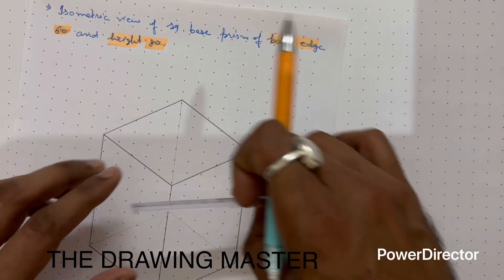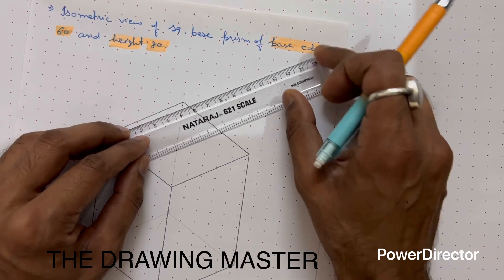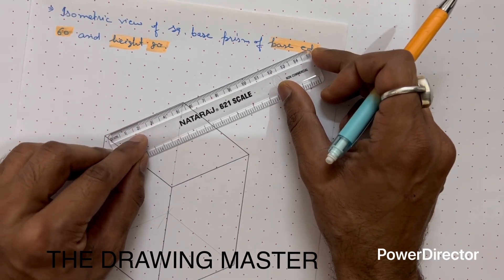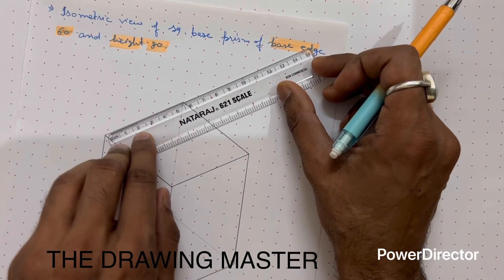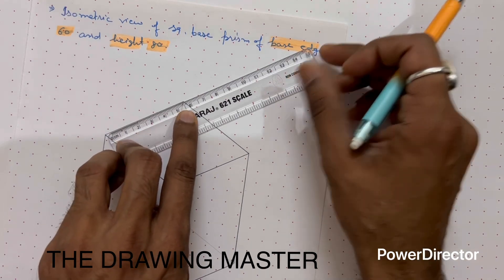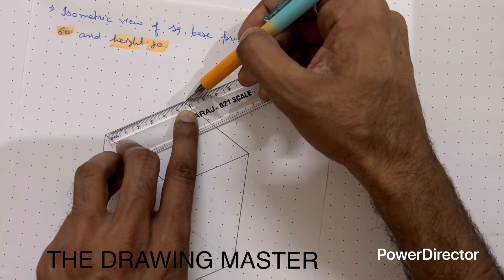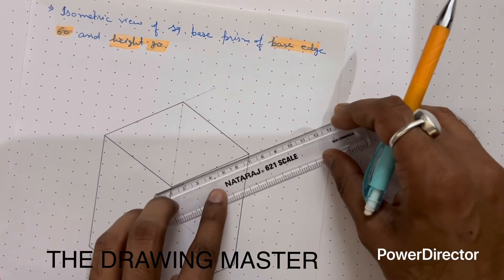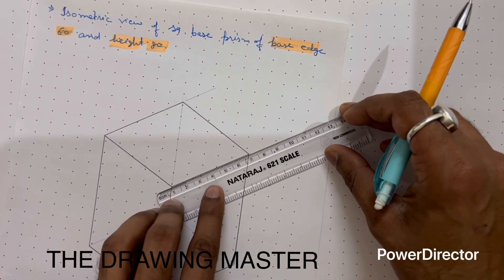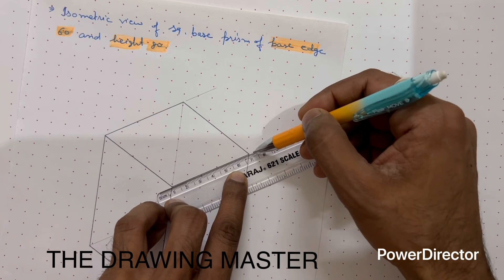Let's go for dimensioning. For dimensioning again you have to use the 30-degree extension lines. There is no need to use the protractor again. This line is already at 30 degrees. Take the extension, take the extension line from this point.